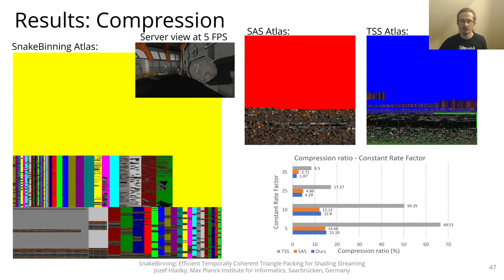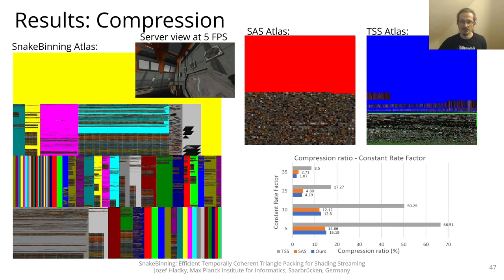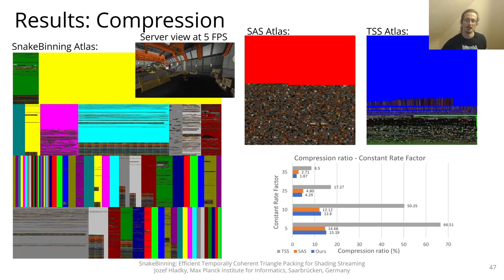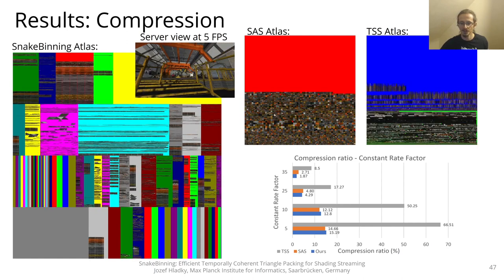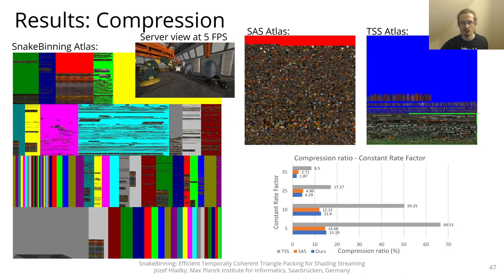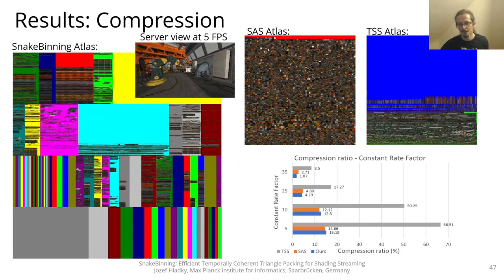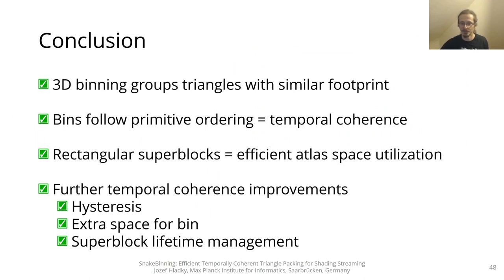Atlas frames are demonstrated at 5 frames per second, with superblocks depicted as colorful columns. To evaluate temporal coherence, we measured the compression ratio for different constant rate factors. Our compression efficiency is on par with SAS, even though sharp shapes at bin boundaries don't compress as well as the rectangular quad blocks of SAS. As expected, TSS performs much worse since it has no temporal coherence. In conclusion, we introduced a three-dimensional binning approach to group triangles based on their screen space projected footprint, demonstrated that packing bins into snake patterns achieves near-ideal sample distributions, and showed that real-time performance and novel view quality outperform state-of-the-art approaches.